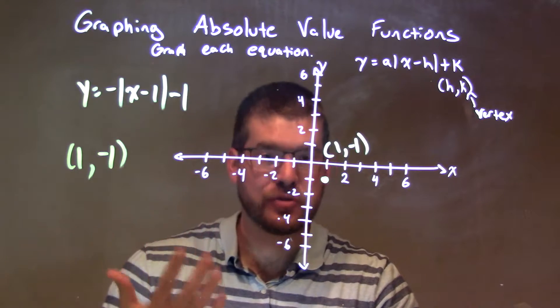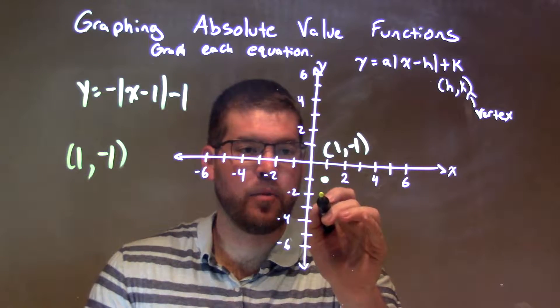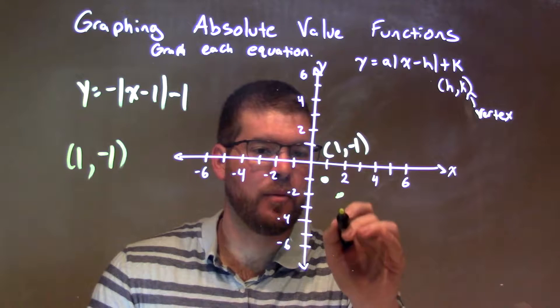Negative 1 is the slope, so from that point, from that vertex, we go down 1 to the right 1. Down 1 to the right 1.